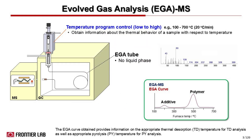Evolved gas analysis provides temperature profiling of material when we heat the sample at a defined ramp temperature from low to high. Typically, we heat it from 100 to 700 degrees Celsius.